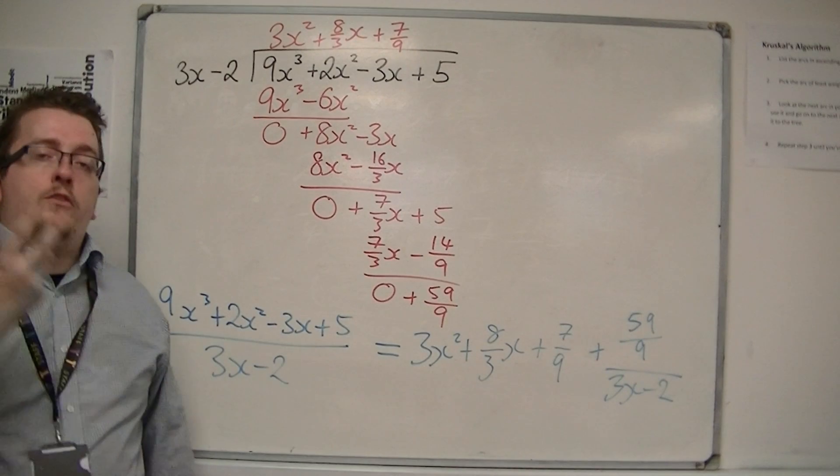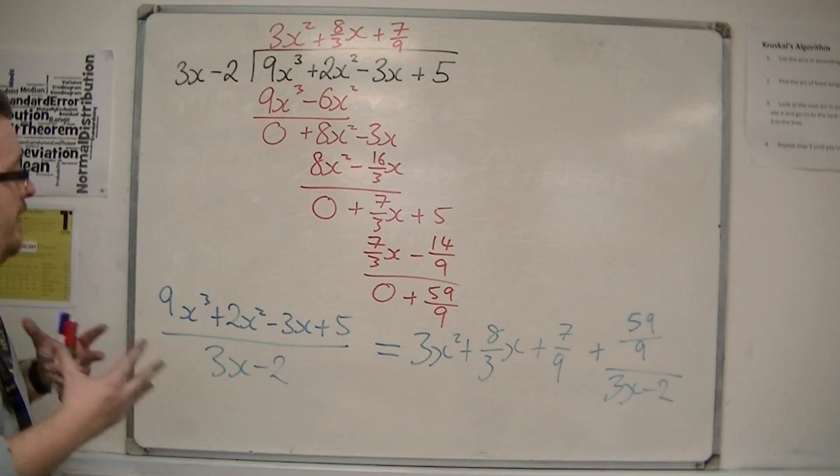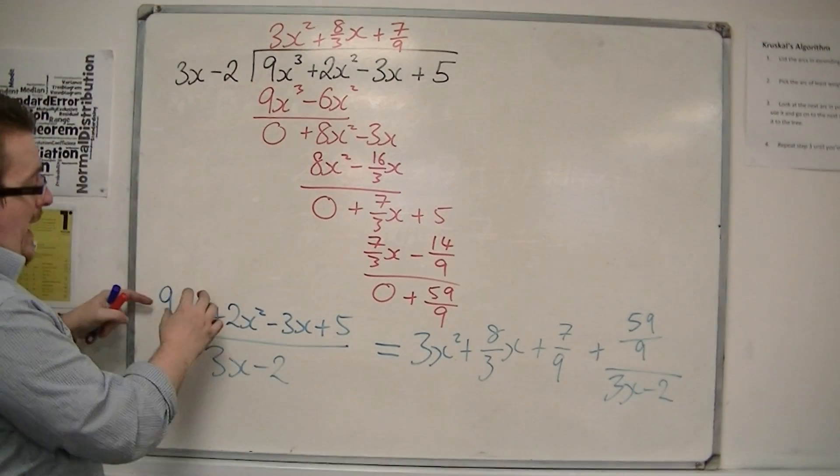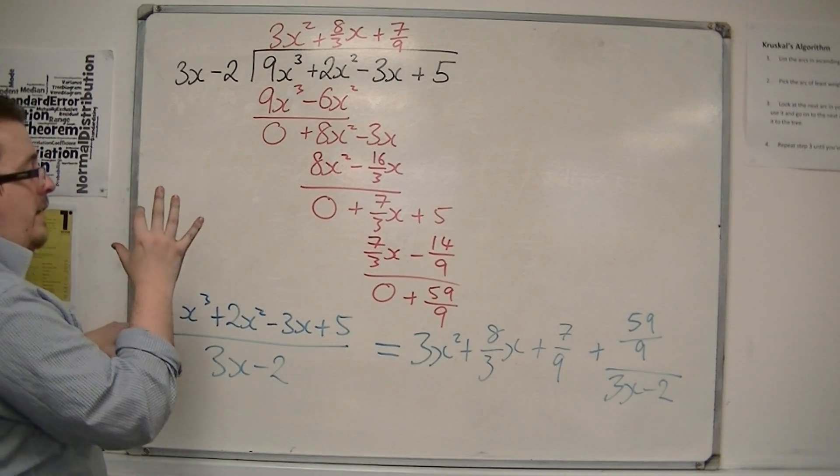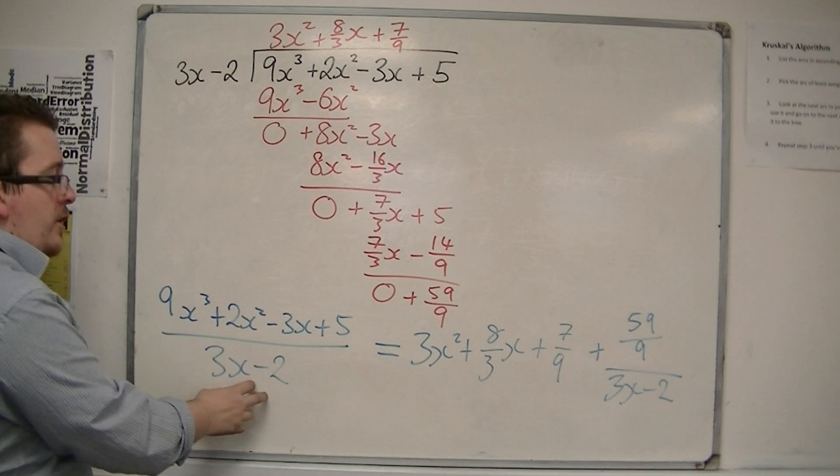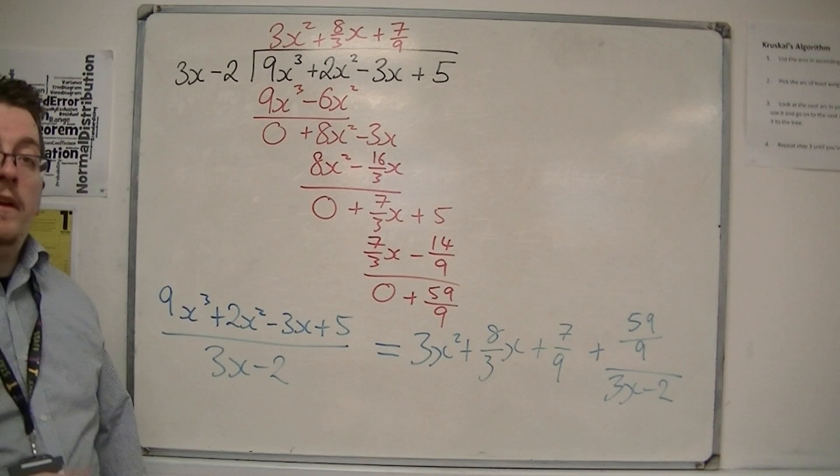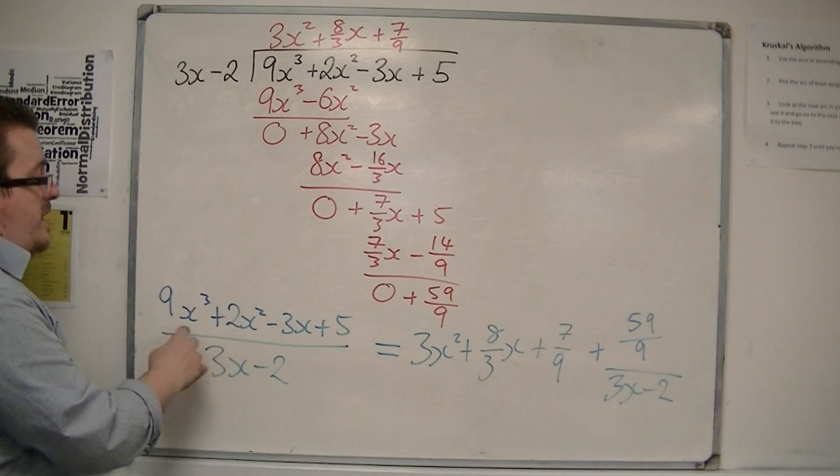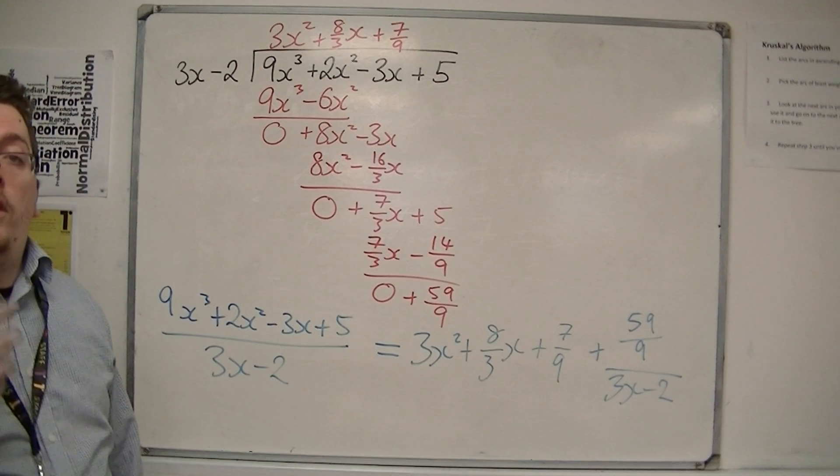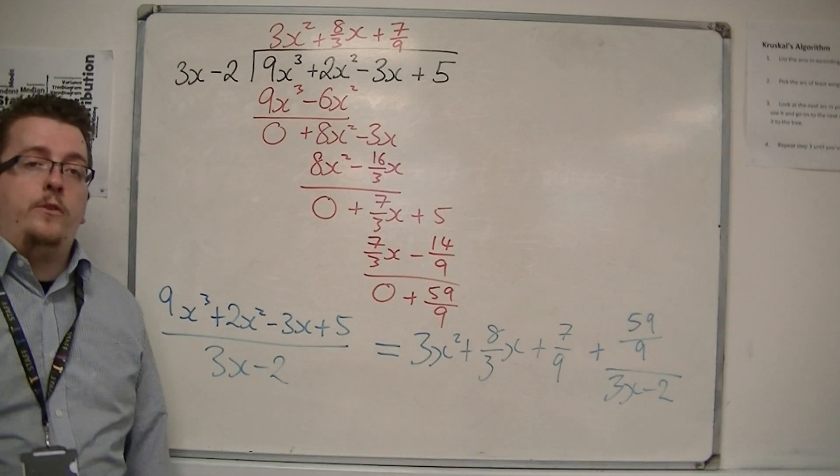But that is the process that you can go through, and you can use polynomial division in this way when you have the highest power on the top of the fraction being larger than or equal to the largest power on the bottom. So because I've got an x cubed at the top and an x on the bottom, polynomial division is going to work. If it was the other way around, I cannot do it. I can't do 3x minus 2 divided by a cubic. It doesn't work that way. And that's where we would have to start using partial fractions, and those videos are coming later.